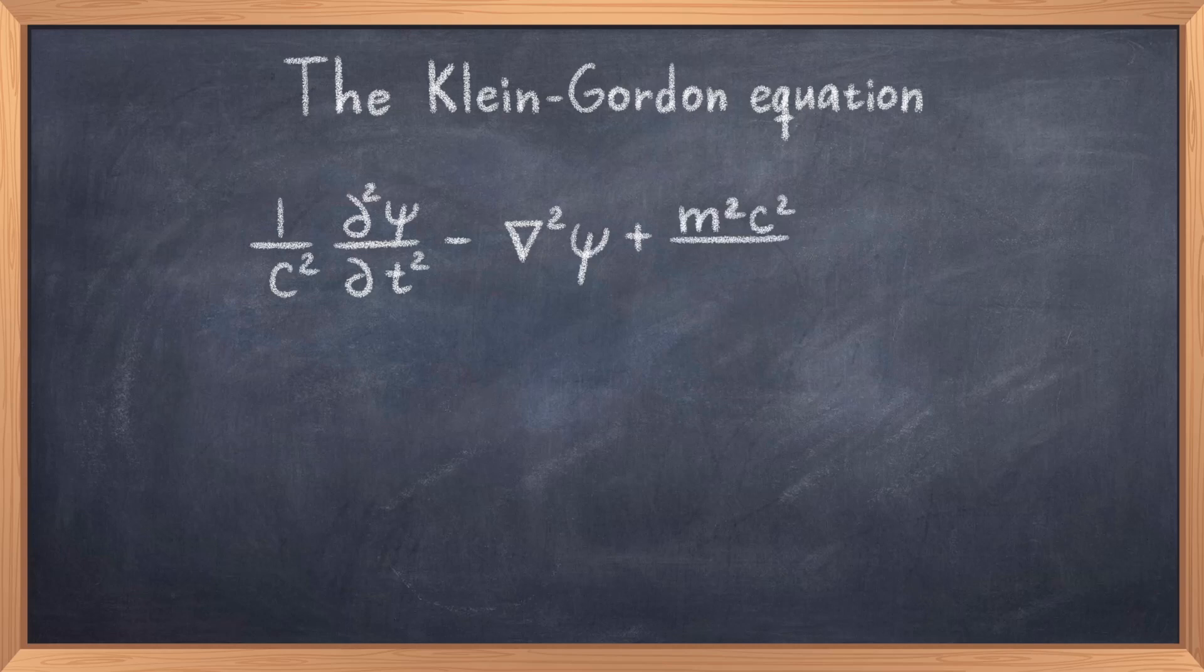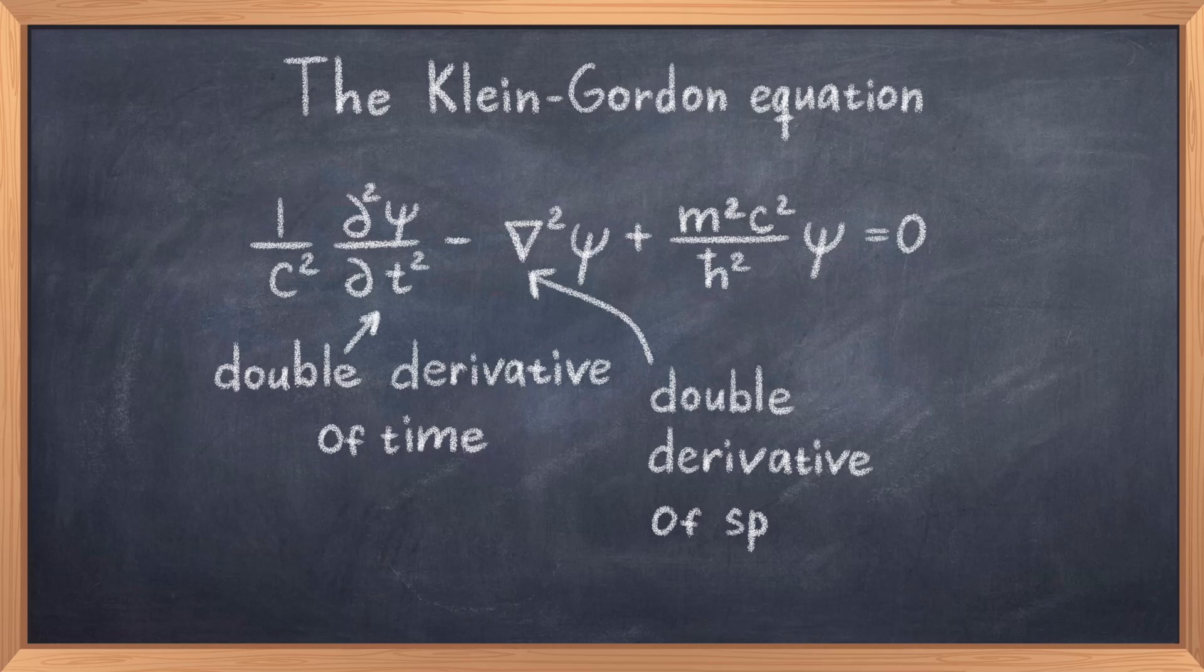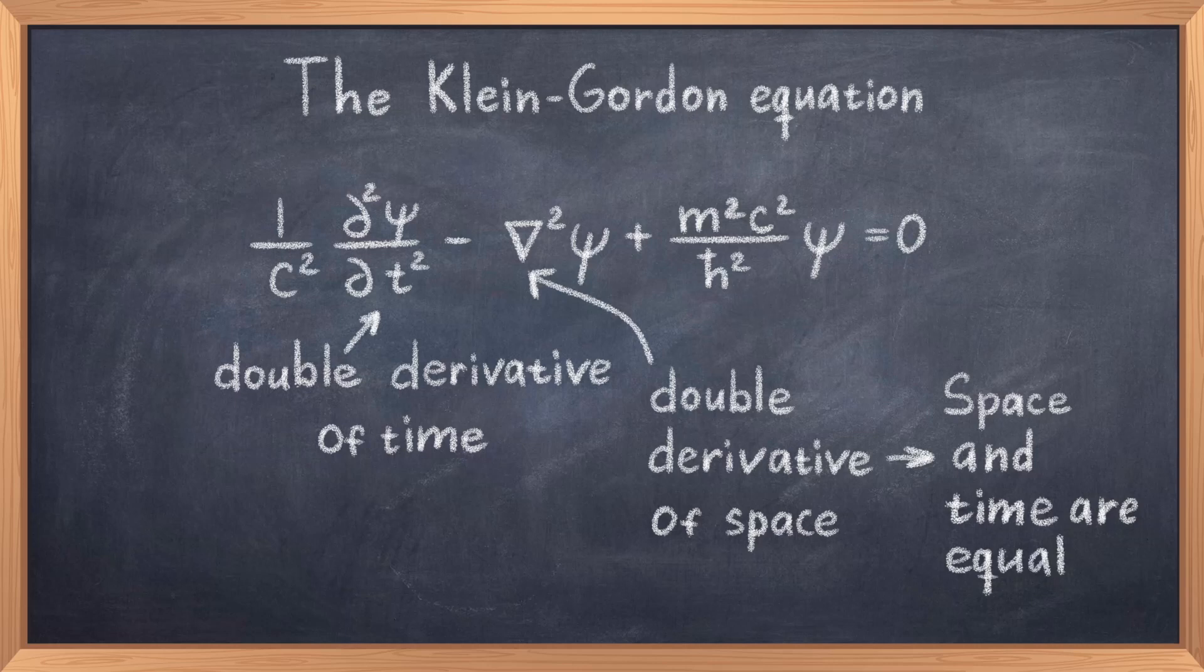The Klein-Gordon equation can be written as 1 over c squared times the double derivative with respect to t of psi minus the Laplacian of psi plus m squared c squared divided by h bar squared times psi is equal to 0. The important thing about this equation is that now we have a double derivative with respect to time AND with respect to space. Thus this equation treats space and time equally, and it therefore works as a relativistic equation considering spacetime.